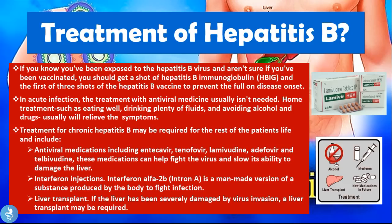If someone has been exposed to the Hepatitis B virus and is unsure whether they've been vaccinated, they should get a shot of Hepatitis B immunoglobulin (HBIG) and the first three shots of the Hepatitis B vaccine to prevent full onset of the disease — this applies after a recent tattoo or sexual encounter with an infected person. For acute infection, antiviral medicine usually isn't needed; home treatments such as eating well, drinking plenty of fluids, and avoiding alcohol and drugs will relieve symptoms, since alcohol and certain medications can cause liver toxicity.